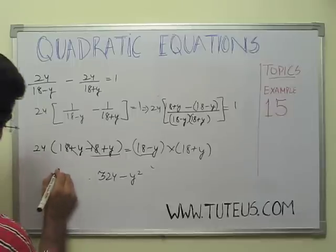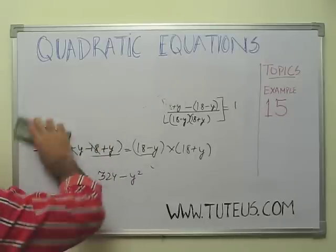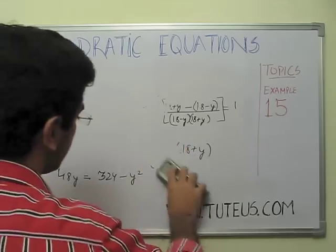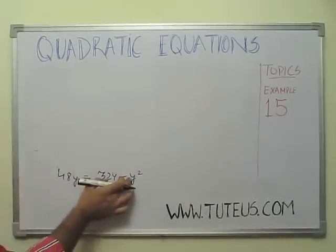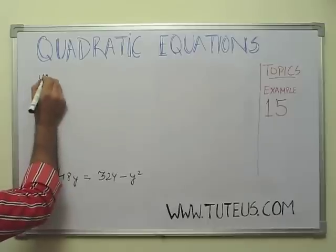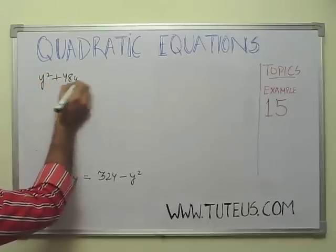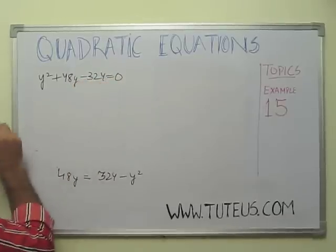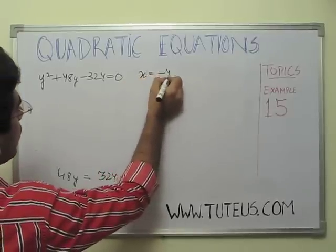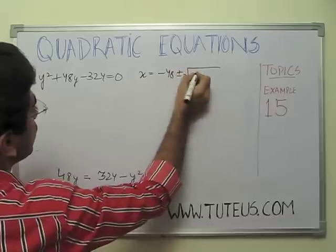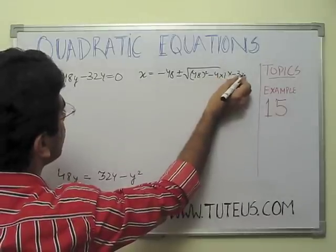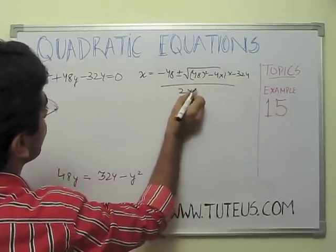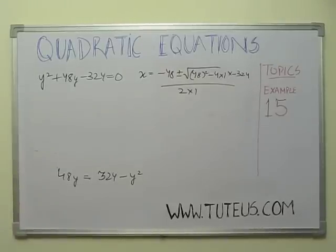Solving the equation: 48y equals 324 minus y squared. Rearranging, we get y squared plus 48y minus 324 equals 0. Using the quadratic formula, y equals minus 48 plus or minus the square root of 48 squared minus 4 times 1 times minus 324, all divided by 2 times 1.